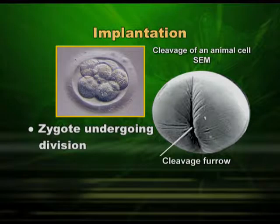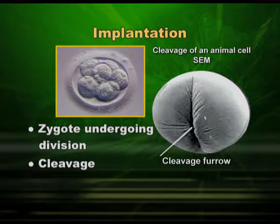Once fertilization has taken place in the fallopian tube, division begins immediately while moving through the oviduct to the uterus — it is undergoing division continuously. The first division of the fertilized egg, the zygote, is called cleavage. You can see cleavage in the slide. This divides the zygote into two cells. The cells remain attached, and then a second division horizontal to the first results in four cells, and the division goes on.